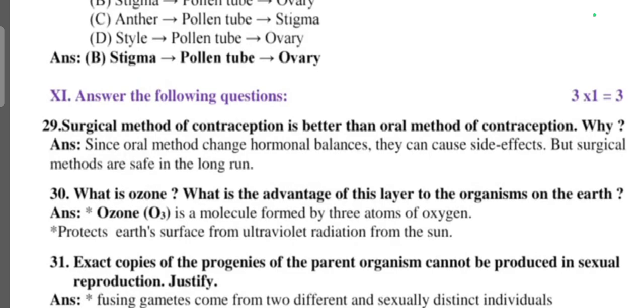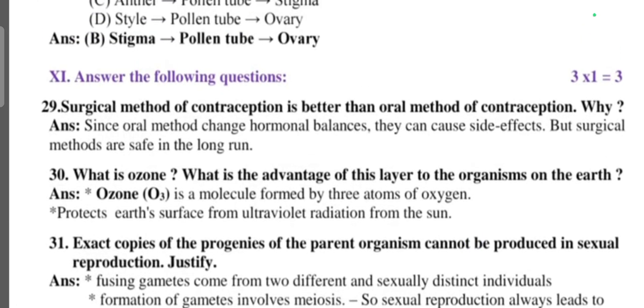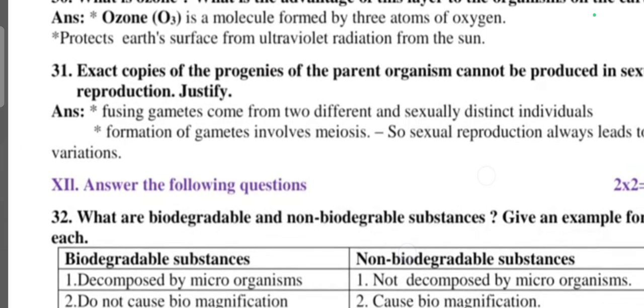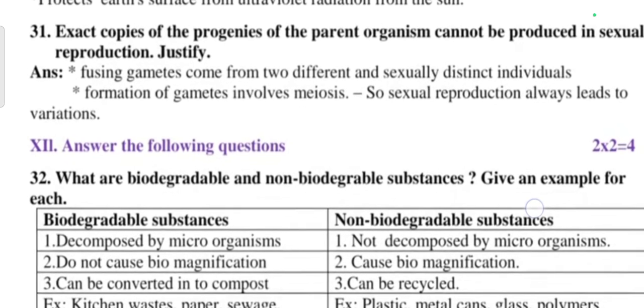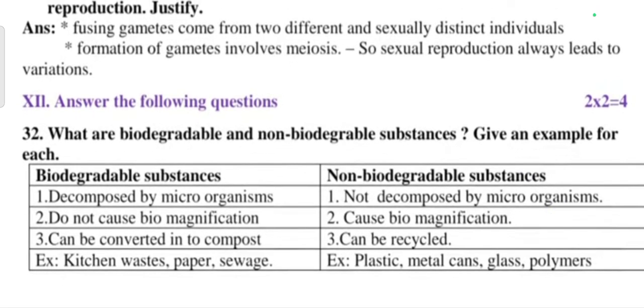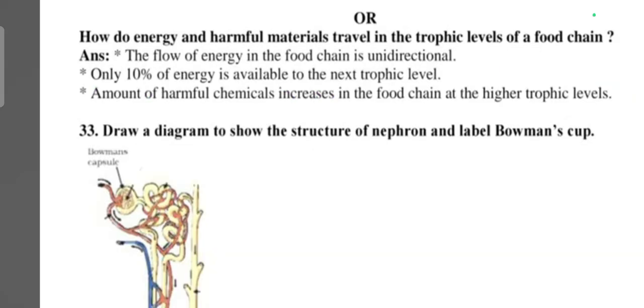Exact copy of progeny of the parent organism cannot be produced in sexual reproduction. Justify. Fusing gametes come from two different and sexually distinct individuals. Formation of gametes involves meiosis, so sexual reproduction always leads to variation. Next main: difference between biodegradable substances and non-biodegradable substances. Or question: how do energy and harmful materials travel in trophic levels of a food chain?